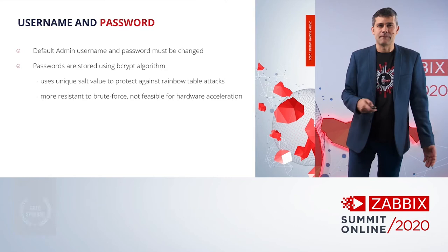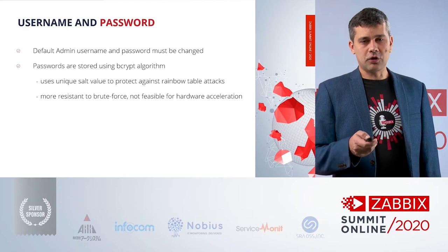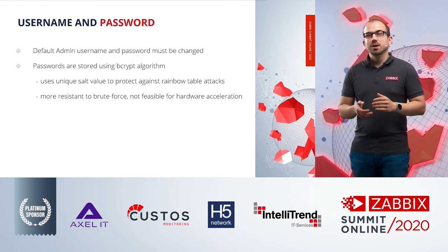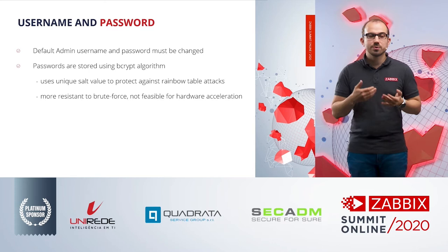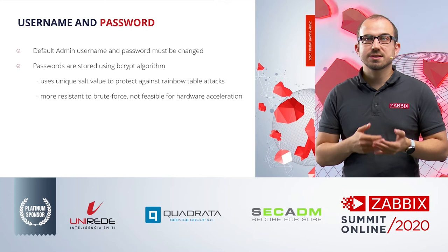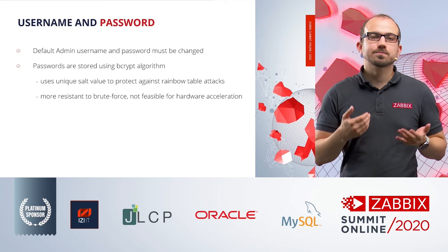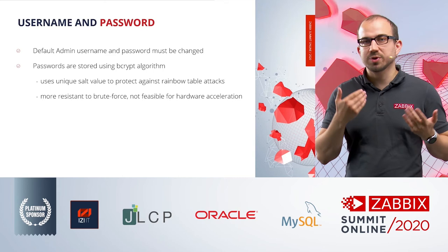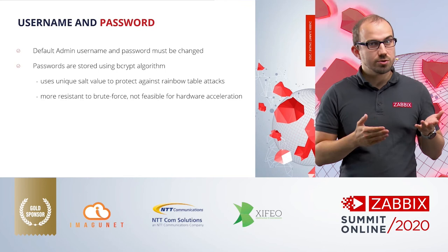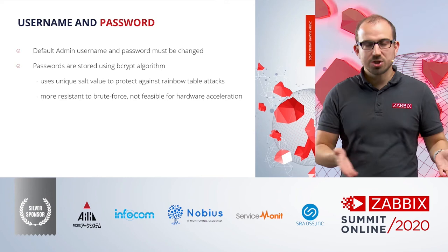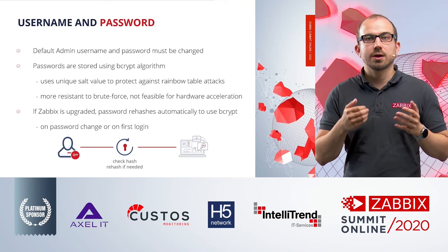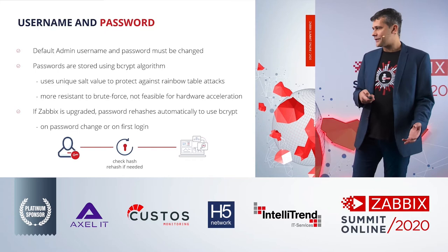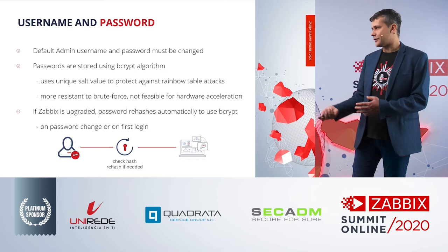Let's talk about password encryption. In previous versions, Zabbix used MD5 to encrypt passwords. Now a more secure method is used: bcrypt, which uses a unique salt to protect passwords and is more brute-force resistant. A really cool thing is that if a user changes their password after an upgrade or simply logs in, the password will be automatically re-encrypted into bcrypt. So after upgrading to 5.2, all passwords are automatically upgraded on first login.